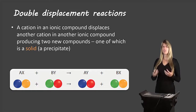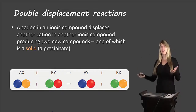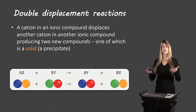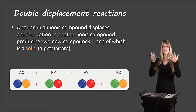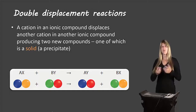So what is a double displacement reaction? Just a review: it's when a cation in an ionic compound displaces or replaces a cation in another ionic compound to produce two new compounds, and one of them has to be a solid. When two aqueous solutions mix together and produce a solid, we call that solid a precipitate. So you have one ionic compound that's aqueous and another that's aqueous, and the cation from each one is swapping places so they each have a new anion attached, giving you two new compounds — one solid and one aqueous.